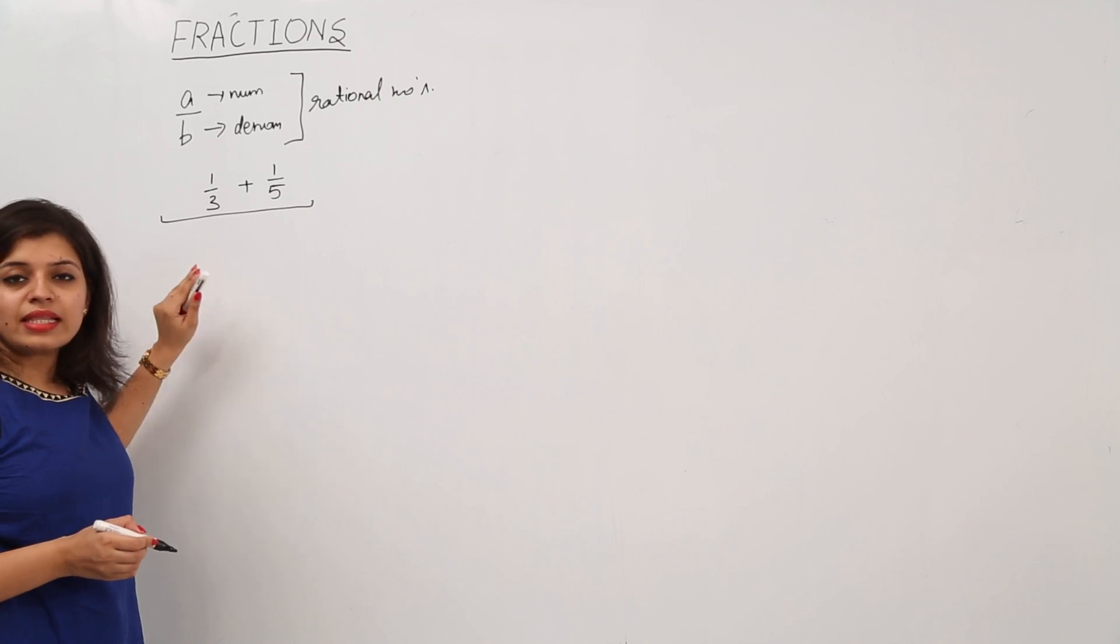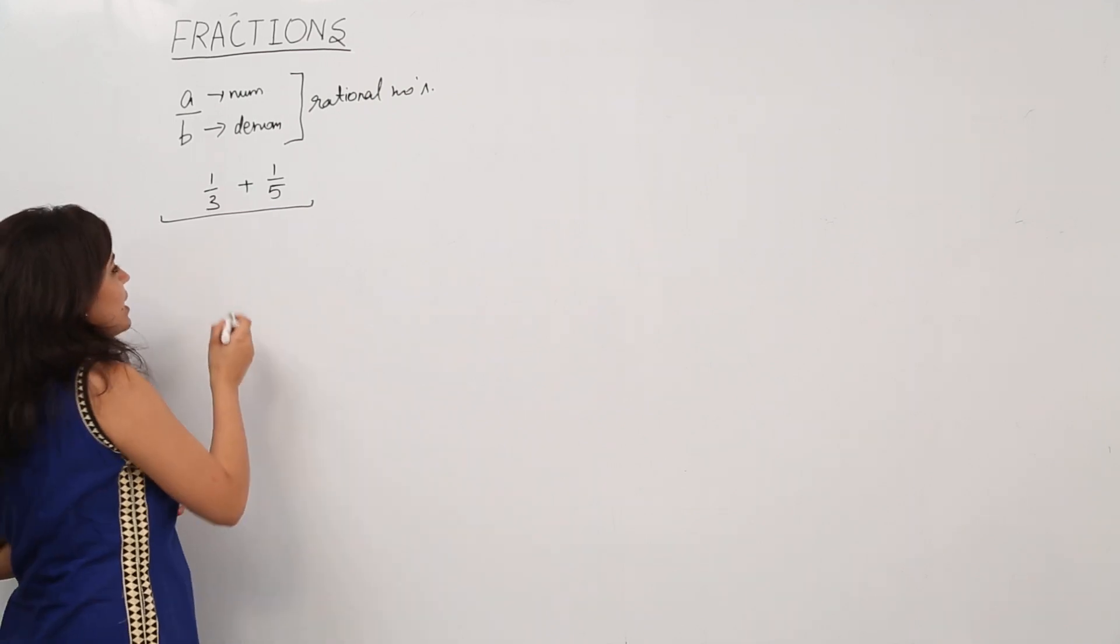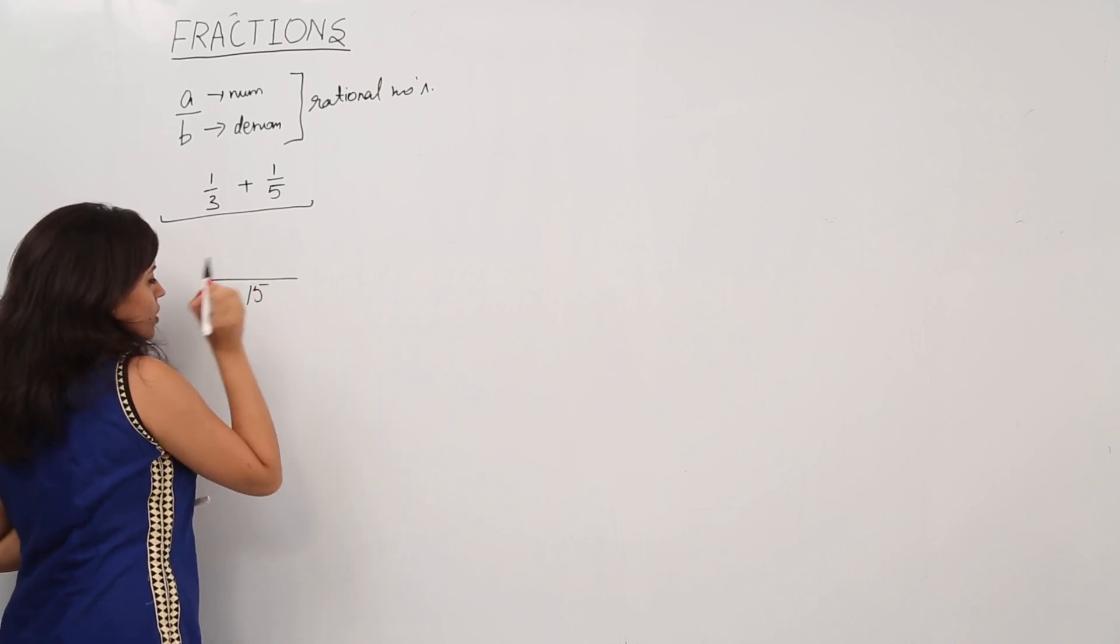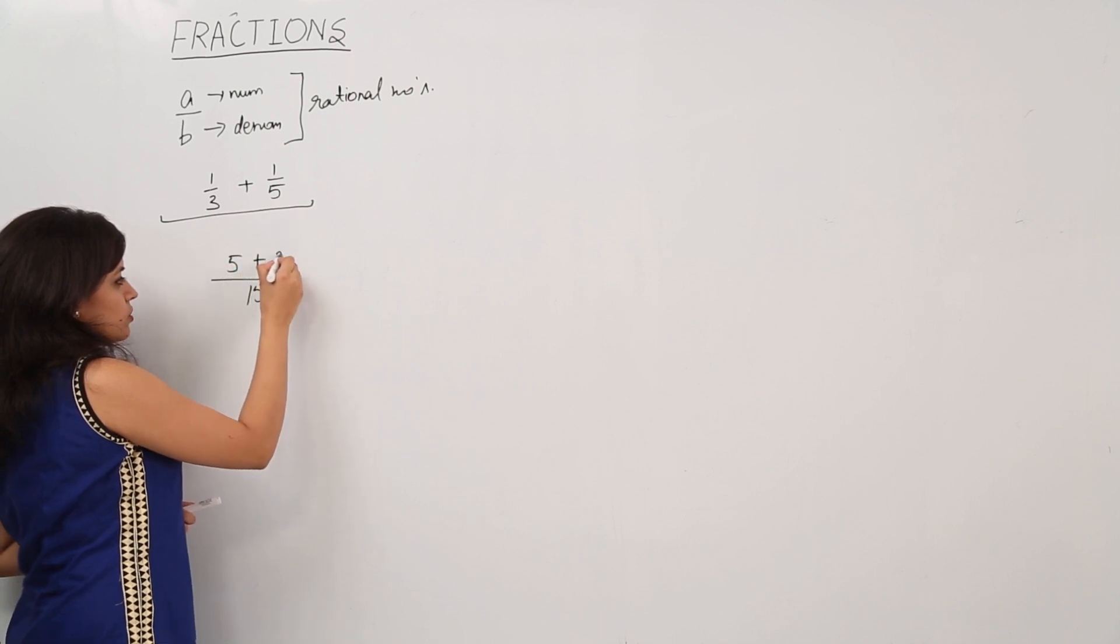For that case we will take the LCM of both denominators, that is 3 and 5. We all know that the LCM of 3 and 5 is 15. So here we will have 5 and 3.